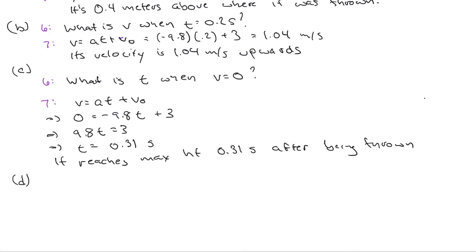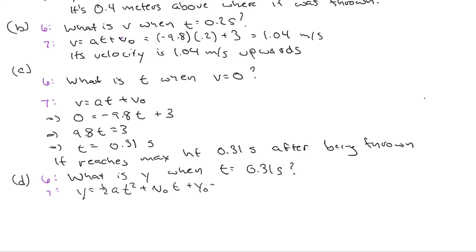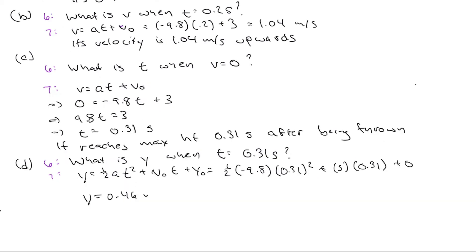Part D asks what the ball's maximum height is. Now that I know the time, the question is straightforward: what is y when t equals 0.31 seconds? I solve using the kinematic equation, plug in the values, and arrive at y equals 0.46 meters. So the max height is 0.46 meters above where it was thrown.